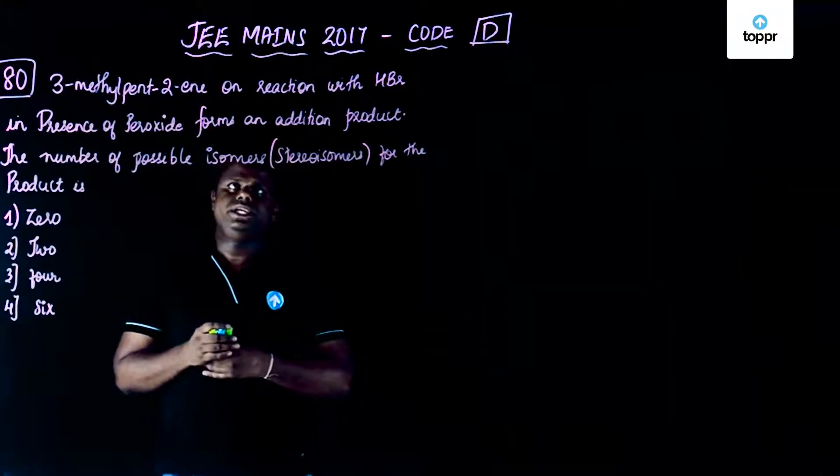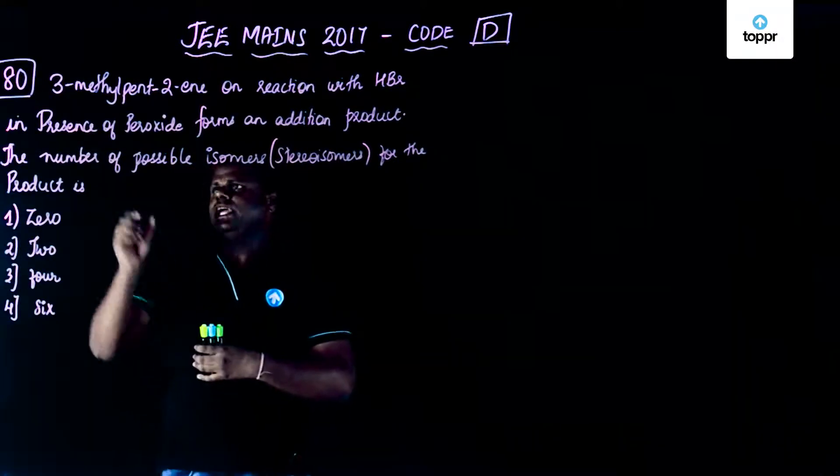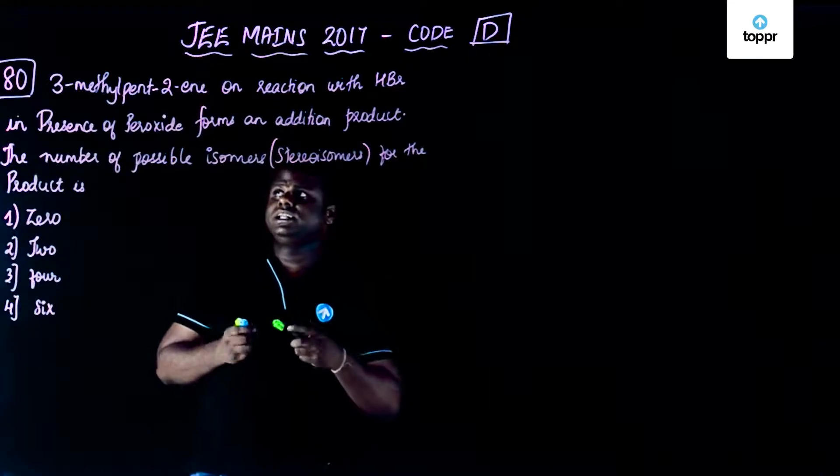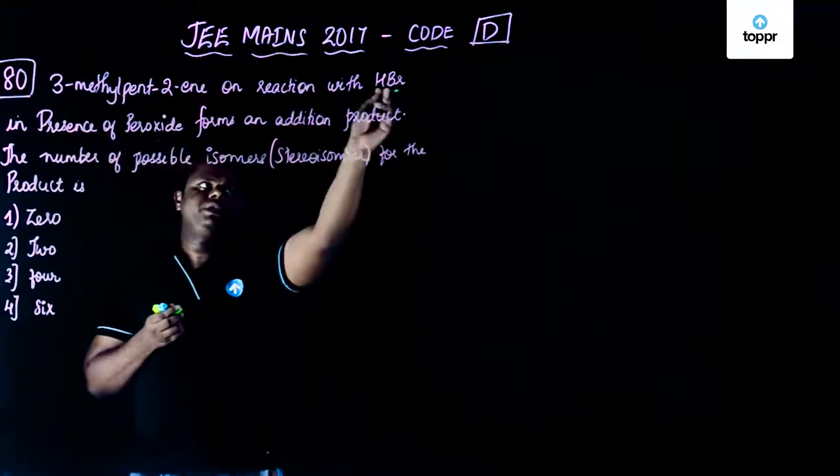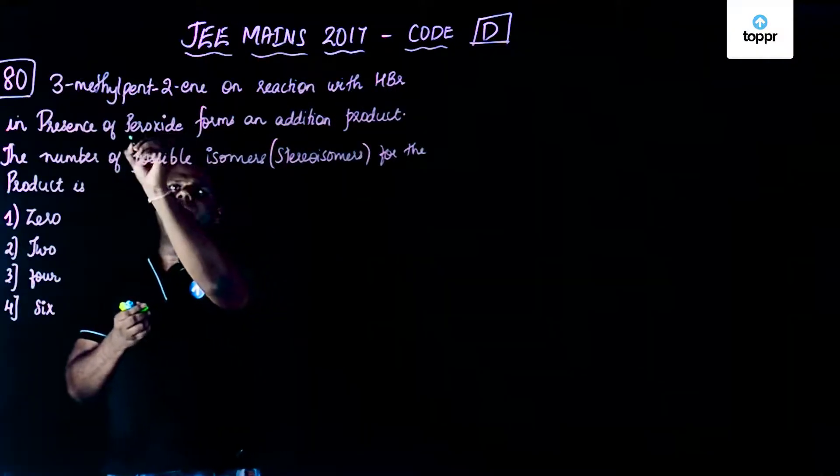3-methylpent-2-ene on reaction with HBr in presence of a peroxide. So look at the keywords. So this is pent-2-ene on reaction with HBr in presence of a peroxide.